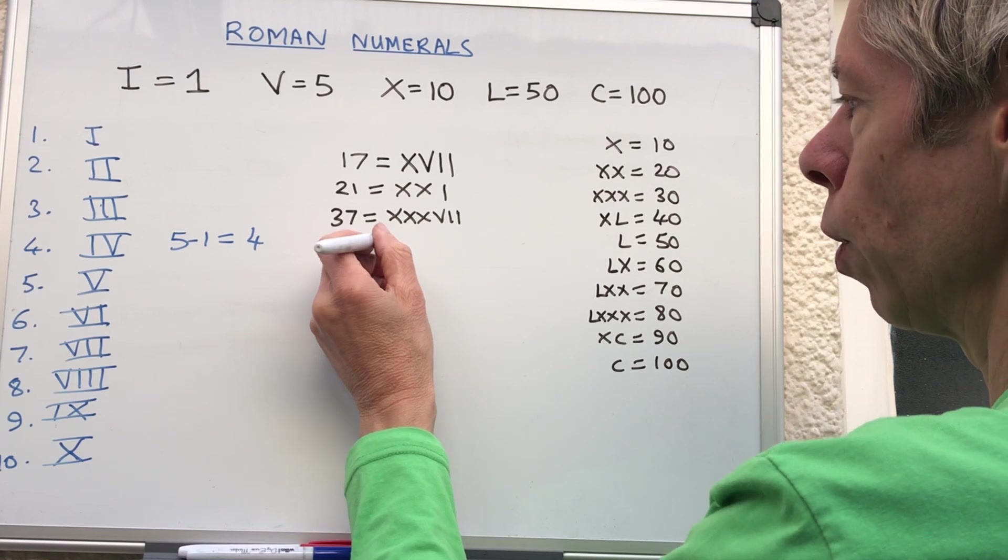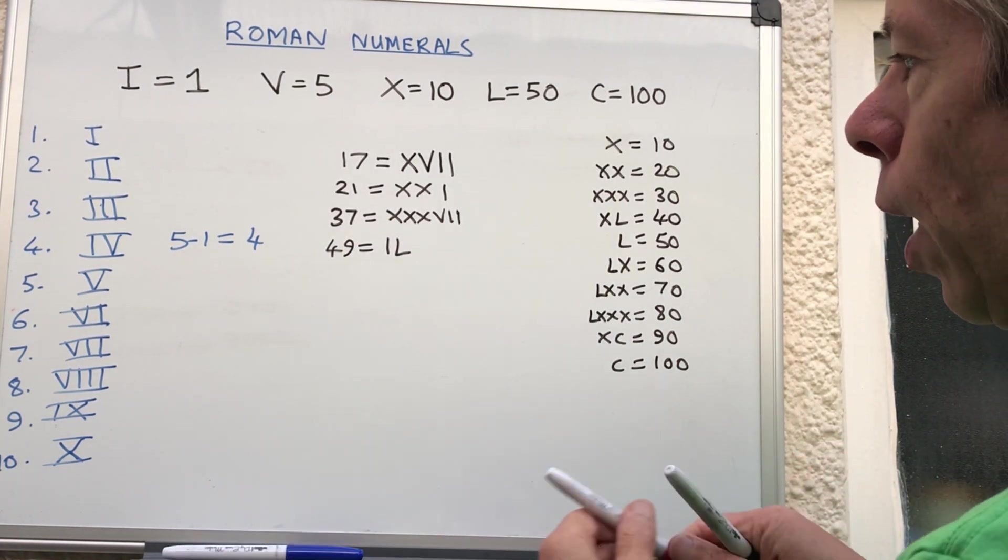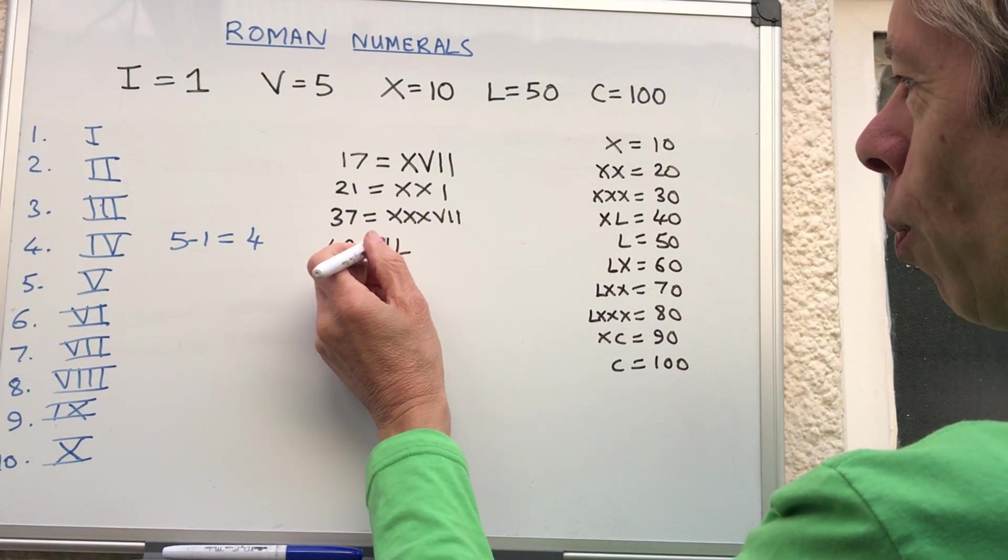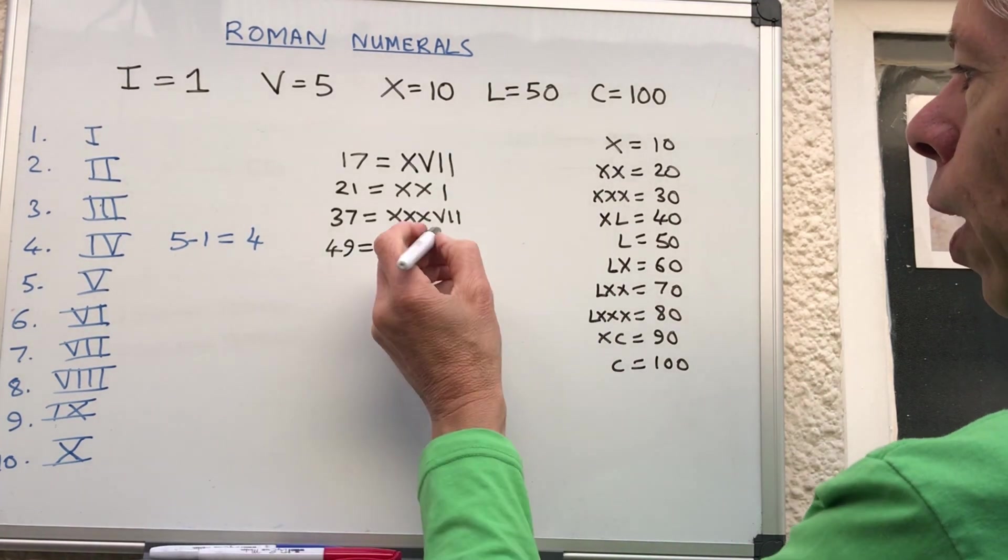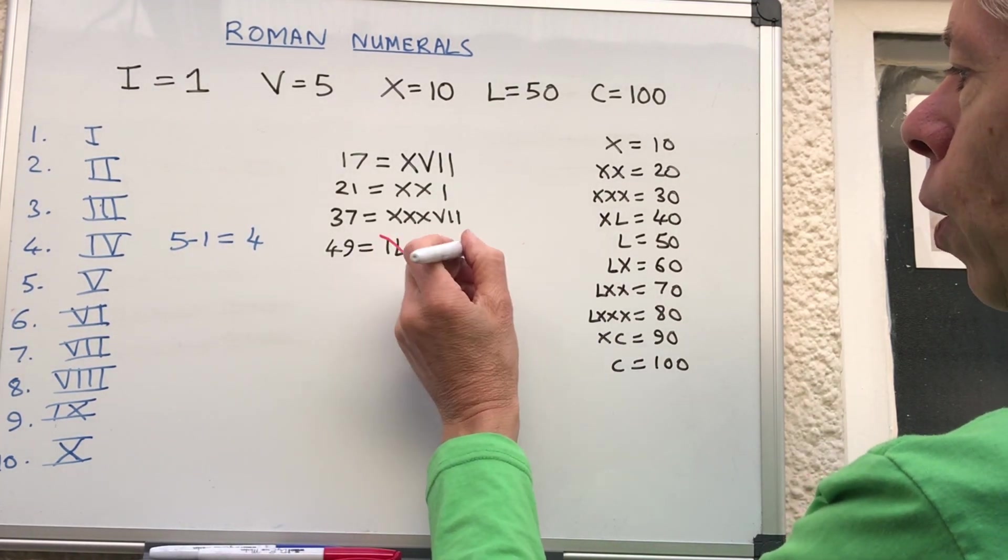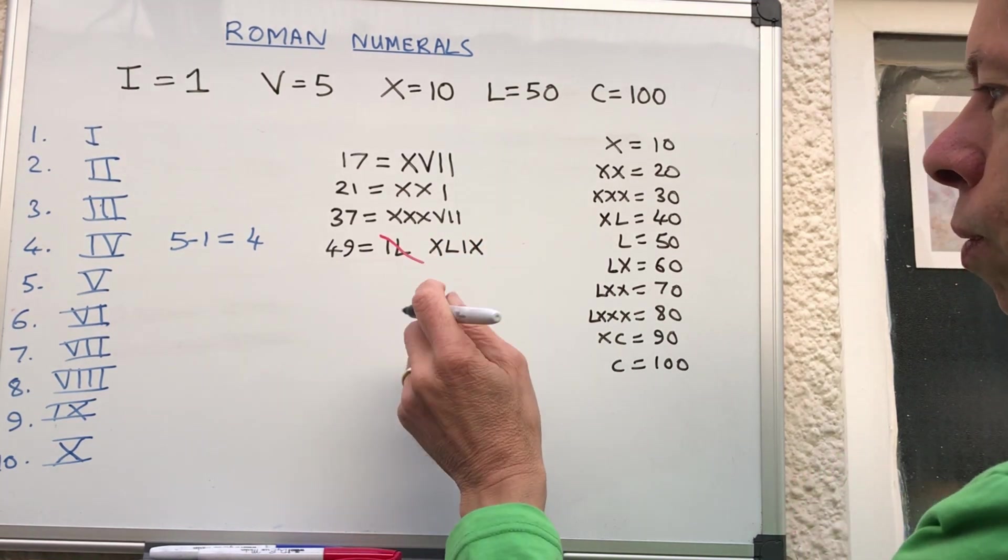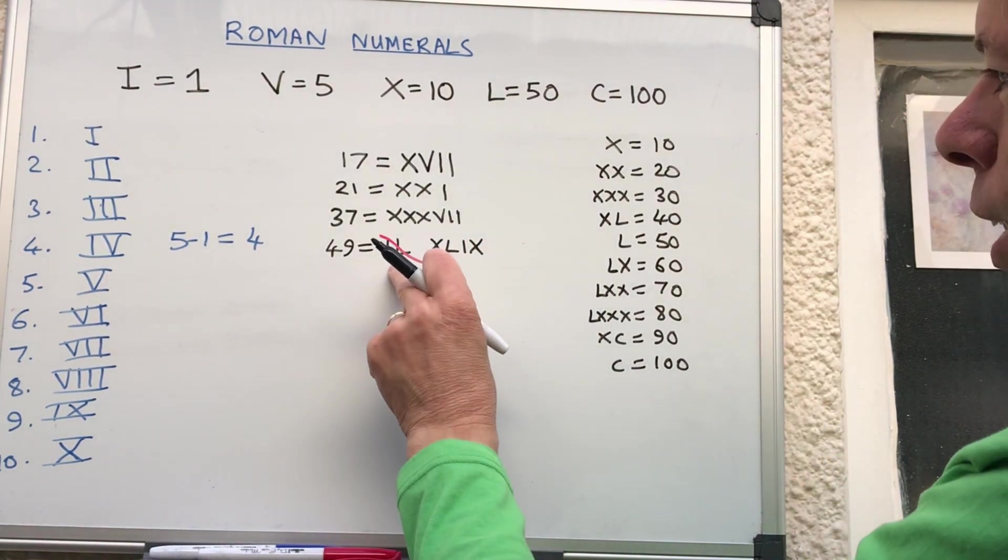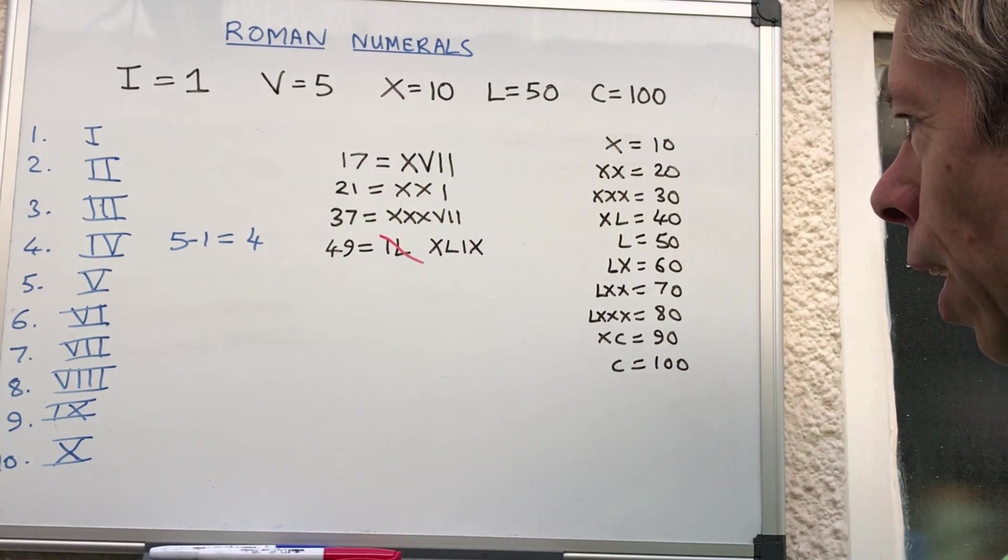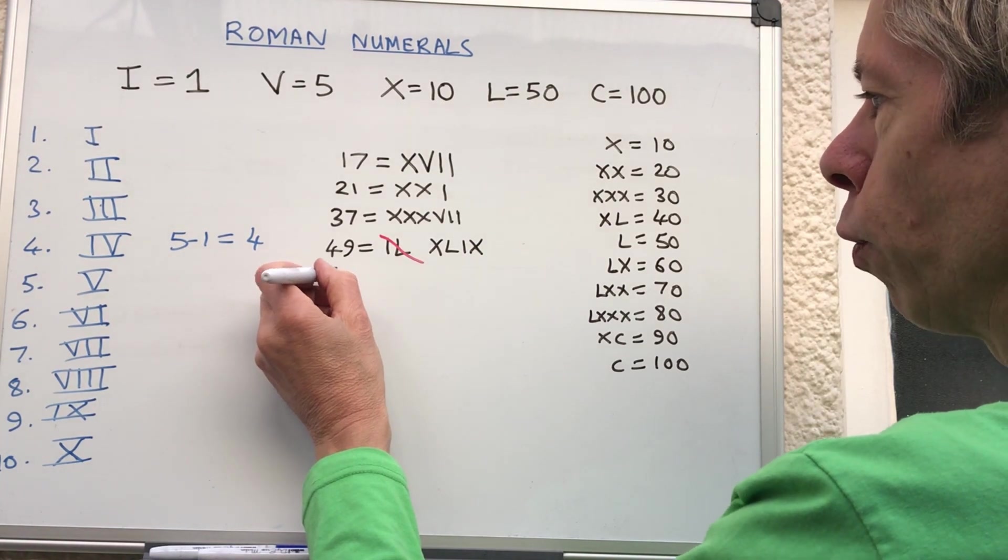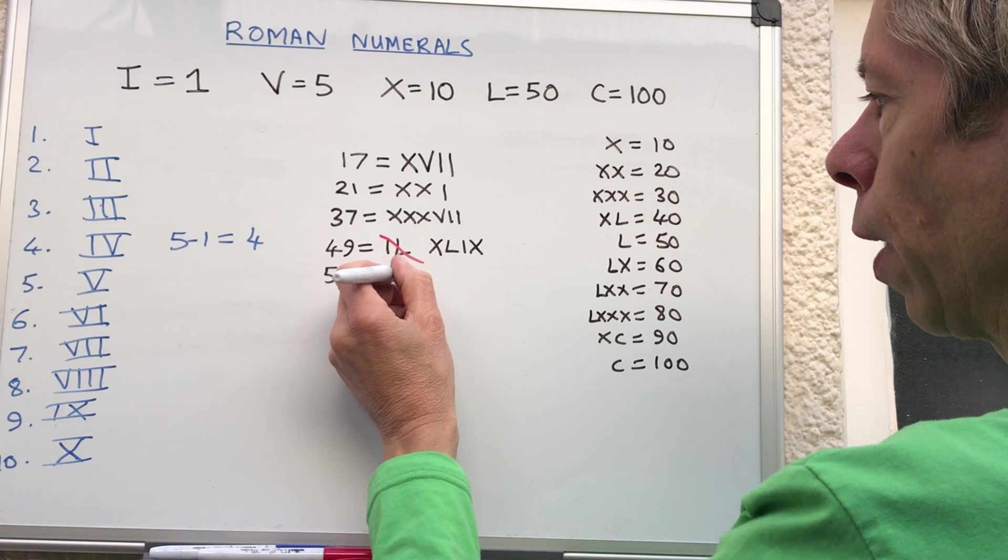You can't do IL - some people have done that which sounds like it's 50 minus one, but it's not allowed. To do 40 you have to write XL, so 49 you need XLIX. Some tutors will say that's shorter, but you have to just have one system otherwise it gets too confusing. 51 would just be L for 50 and then I.